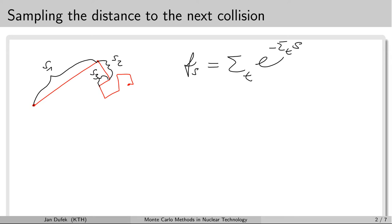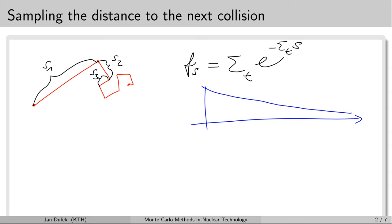Our task is to sample the distance s such that the distribution of our samples will have the probability density function f(s), which is the exponential function. We are going to do this by transforming random numbers from the random number generator, which have a uniform distribution over the interval [0, 1], into random numbers given by our f(s) probability density function. We have learned about two methods for this transformation: the inverse-transform method and the acceptance-rejection method.